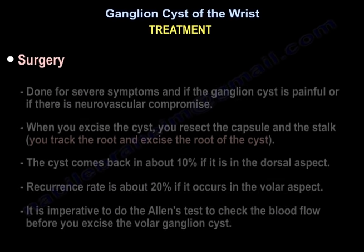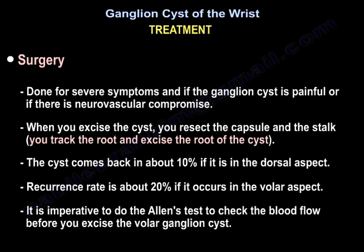Surgery is indicated for severe symptoms, if the cyst is painful, or if there is neurovascular compromise. When excising the cyst, you resect the capsule and the stalk, track the root, and excise the root of the cyst. The recurrence rate is about 10% for dorsal cysts and about 20% for volar cysts. It is imperative to perform the Allen test to check blood flow before excising a volar ganglion cyst.